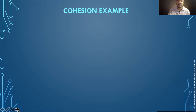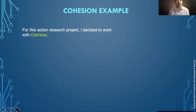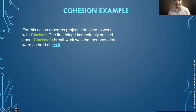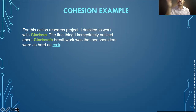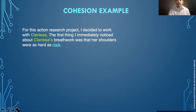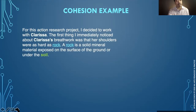Here's an example of cohesion — a fictional example just to highlight the point. For this action research project, I decided to work with Clarissa. The first thing I immediately noticed about Clarissa's breath work was that her shoulders were as hard as rock. Cohesion is taking a keyword from the previous sentence and repeating or reiterating it in a different way into the next sentence so that it flows. Clarissa is being repeated, and a new word comes to bring about the next sentence.